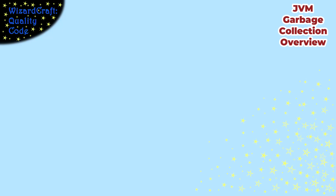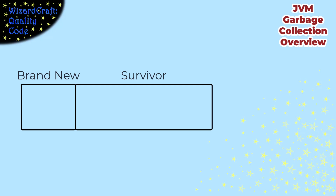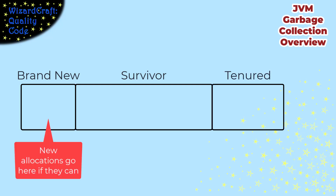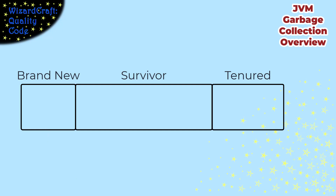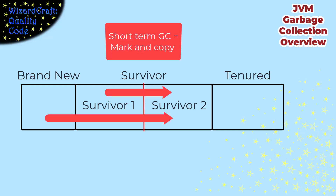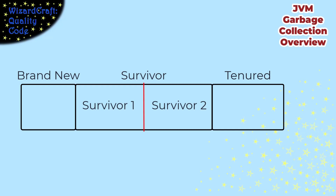Java takes this one step further with three generations: a brand-new area, a survivor area, and a tenured area. When you allocate something, it goes into the brand-new area. The survivor generation actually has two spaces — survivor 1 and survivor 2 — and you're using one at a time. When short-term garbage collection happens, we do mark-and-copy, copying in-use things from the brand-new area and the current survivor area into the other survivor area, counting how many GC cycles each allocation has survived. Things stay in survivor spaces until they've gone through enough cycles and get moved into the tenured area — if you've survived enough cycles, the system considers you long-lived.